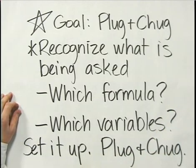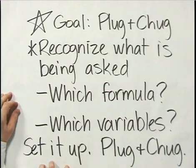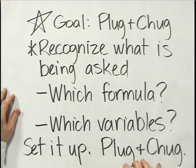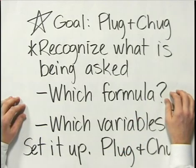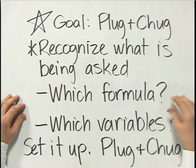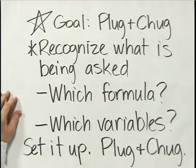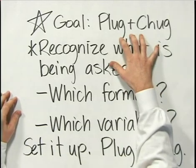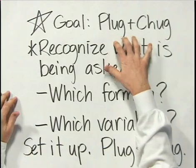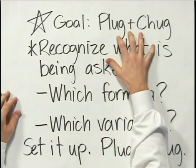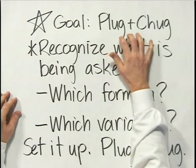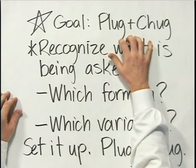Once you recognize what is being asked, you can set it up — that's the second step. And then once you have it set up, it's just plug and chug, solving for the variable or variables that remain. So the goal is to take a complicated, confusing problem, break it down into several steps, turn it into plug and chug, which is always the easiest way to solve a problem.